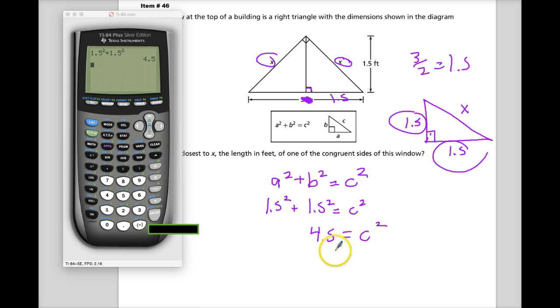All I need to do now is figure out what do I need to do to get C. Well, the opposite of squaring is square root, so I'll just take a square root of both sides. So C is equal to the square root of 4.5, also something I don't keep readily available in my brain. 2.12, something like that.